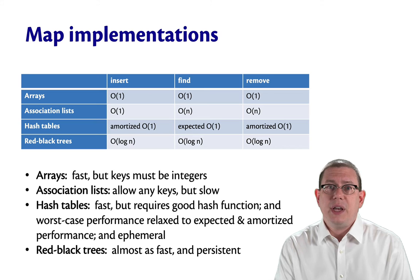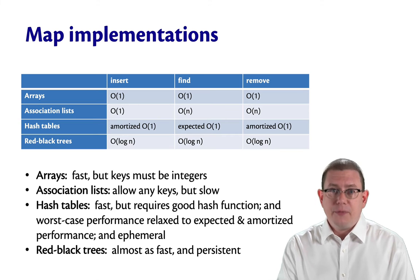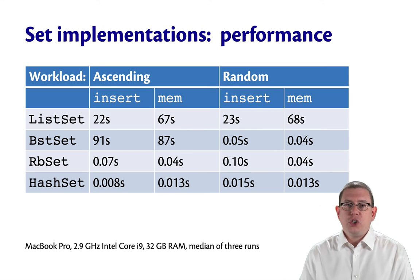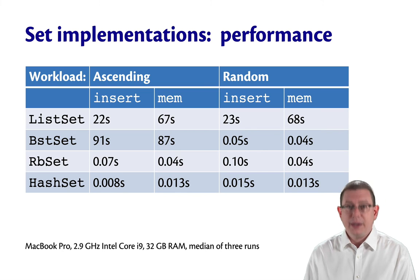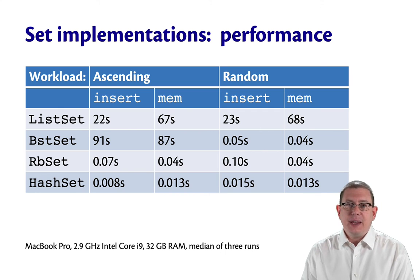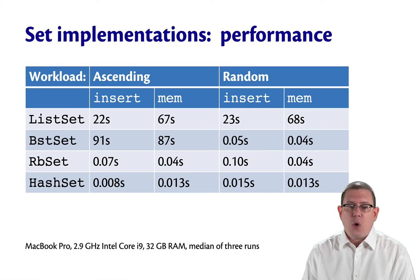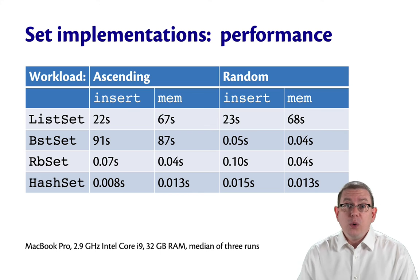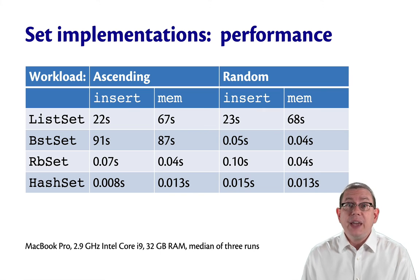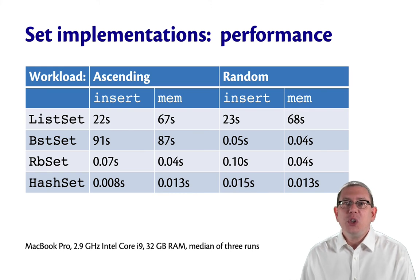It's common for persistent data structures to require logarithmically more time complexity than equivalent ephemeral data structures. I went ahead and finished off our set implementation table by creating a hash set out of OCaml's hash table module. For the ascending and random workloads, we get really blazing fast performance from hash sets — about an order of magnitude better than red-black sets. So if you really want the best possible performance, mutability actually is essential. I joke a lot about the evils of mutability, but you really do get something for it — the fastest map implementation of all four we've looked at.